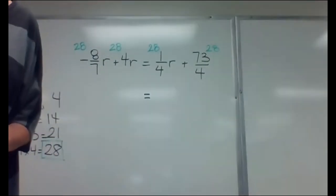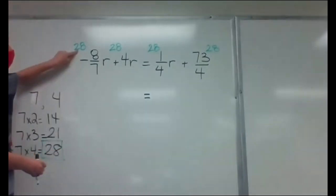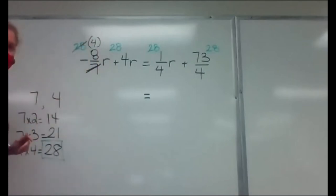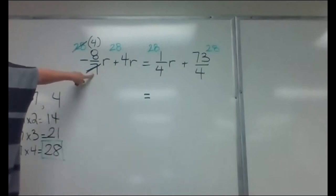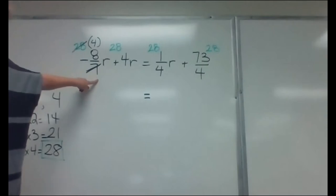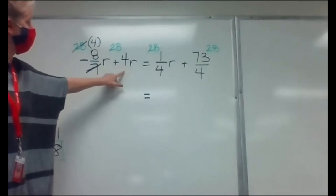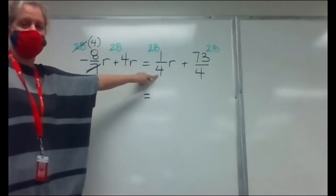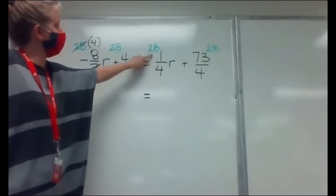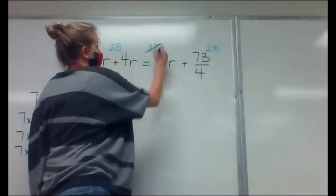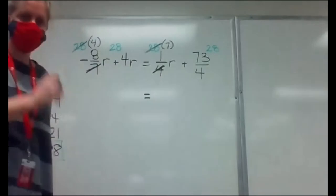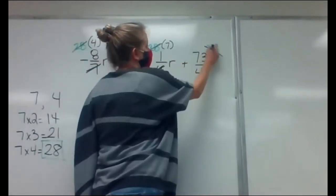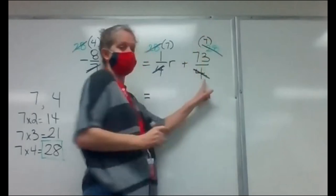All of the denominators — sevens and fours — go into 28. That was the whole point. Now you actually do that division. What is 28 divided by seven? That cancels out: 28 over seven just turns into a four, and look — the denominator disappears. No denominator means no fraction. This one doesn't have a denominator, so it doesn't need that step. But the next term does — 28 divided by four gives me seven. Denominator's gone again. Same for the last one: 28 divided by four again gives seven. All denominators have disappeared — no more fractions.